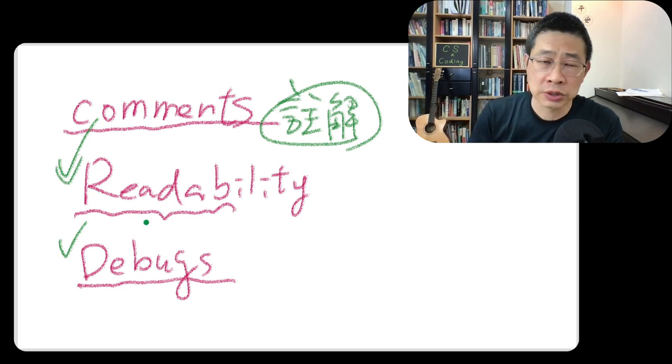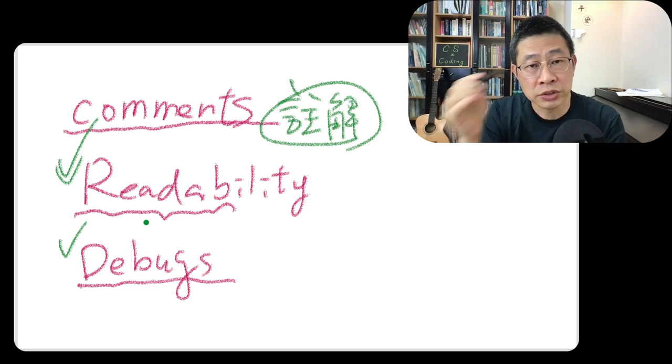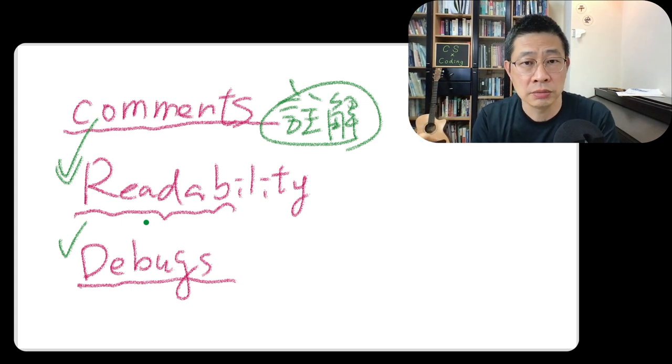Some good documentation of the programmer code, they normally will write about the comment. What is this function for? What kind of input is requires? Maybe specific data type and how many is necessary.